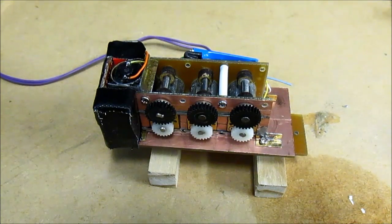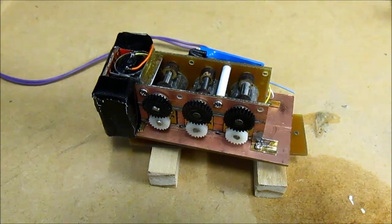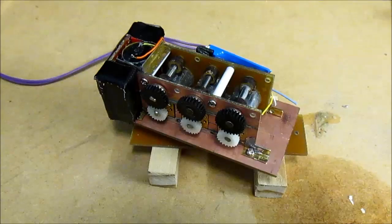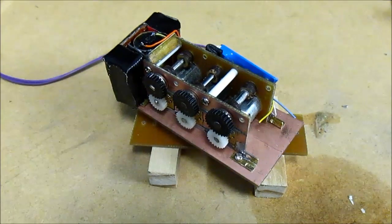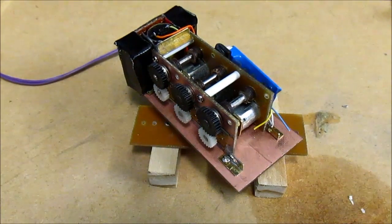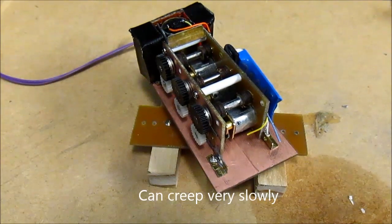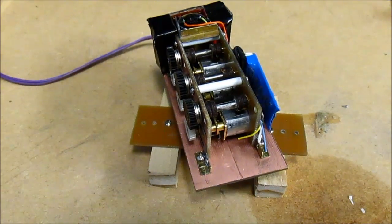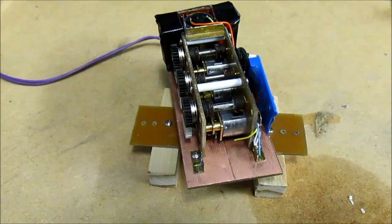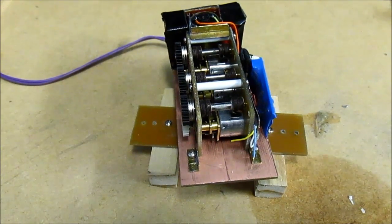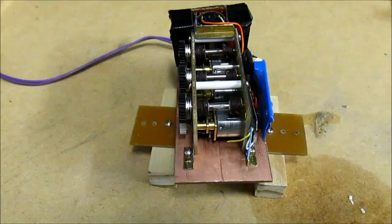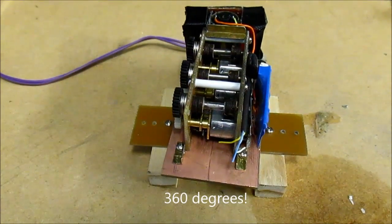And lastly the slewing mechanism. I can slow it right down as you can see there. Just creeping around now. But I'll spin it around the full 180, it can do 360, not a problem.